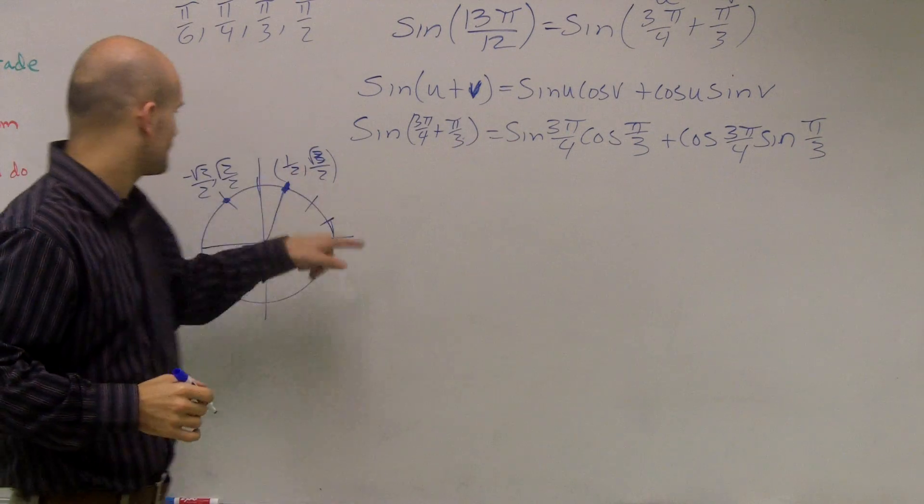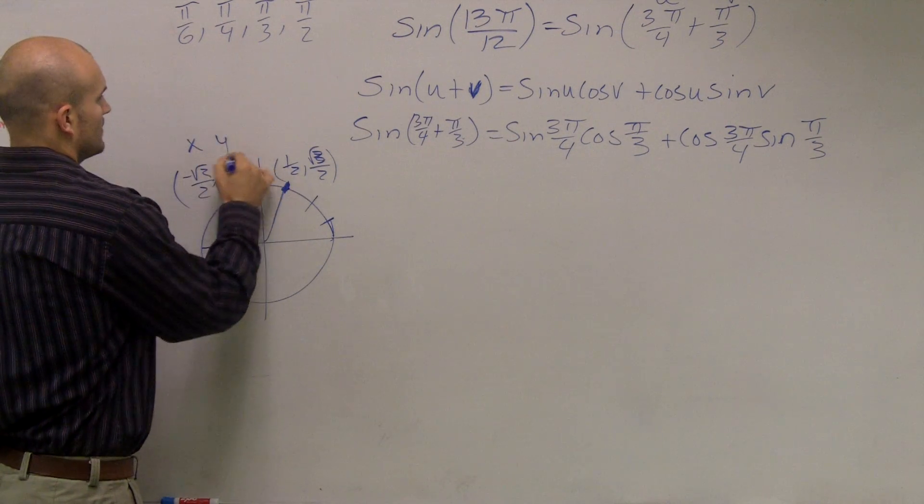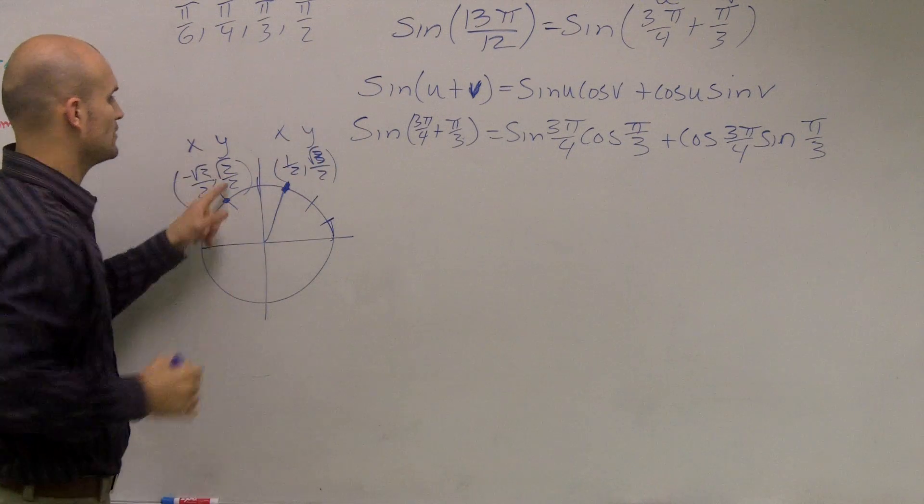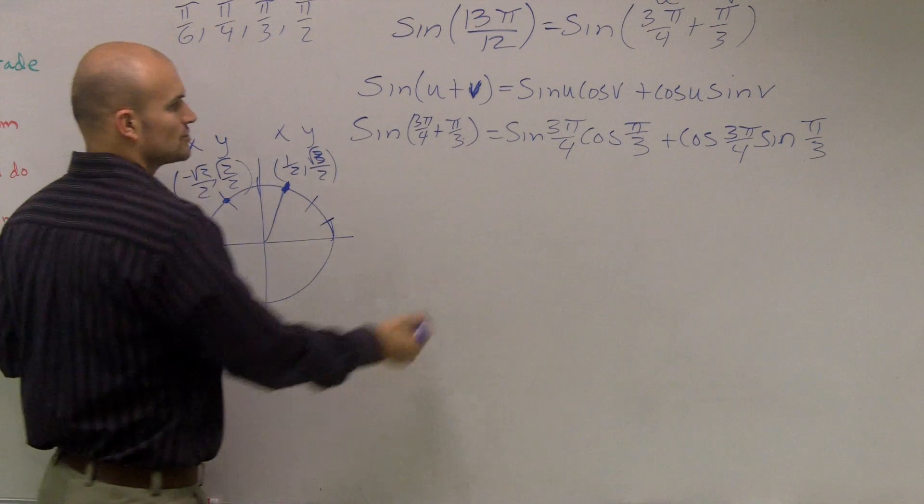So the sine of 3π over 4, remember, is your y coordinate of your coordinate point. So the y coordinate of 3π over 4 is radical 2 over 2.